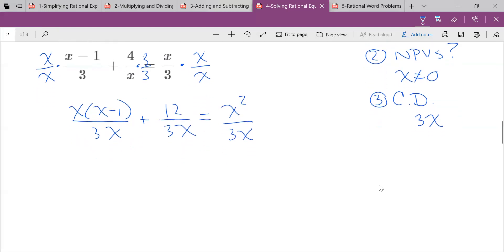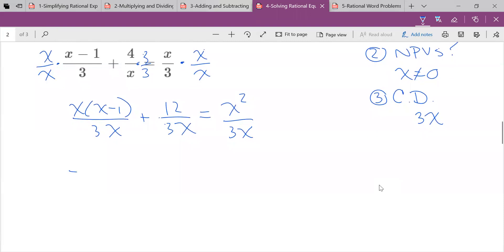Okay, so there's my common denominator. So now I'm going to write everything with my common denominator. So that's 3x. I'm going to distribute at the same time. So that's x squared minus x plus 12 is equal to x squared over 3x. Now, from here,